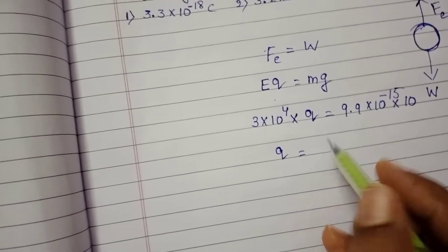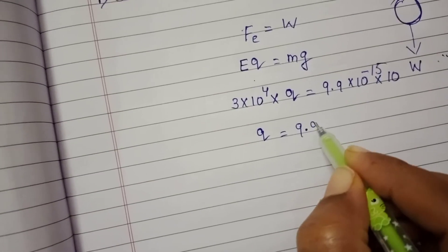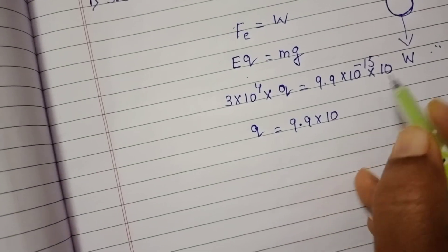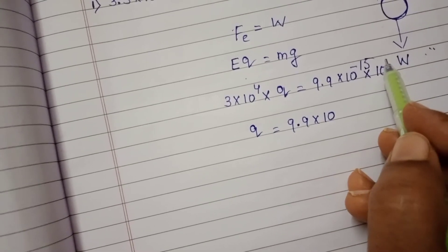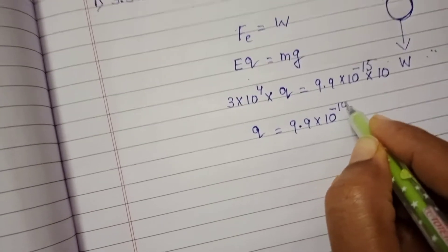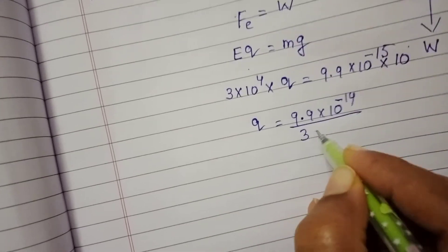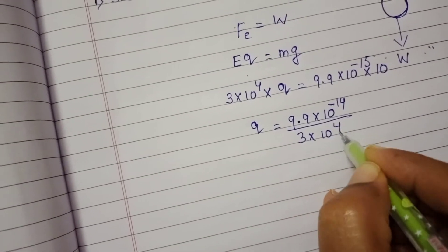Charge of the oil drop equals 9.9 into 10 power minus 15 plus 1 minus 14 by 3 into 10 power 4.